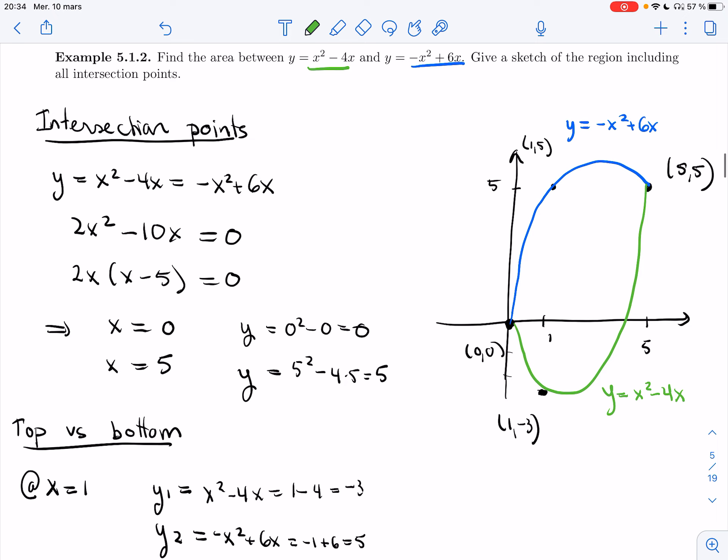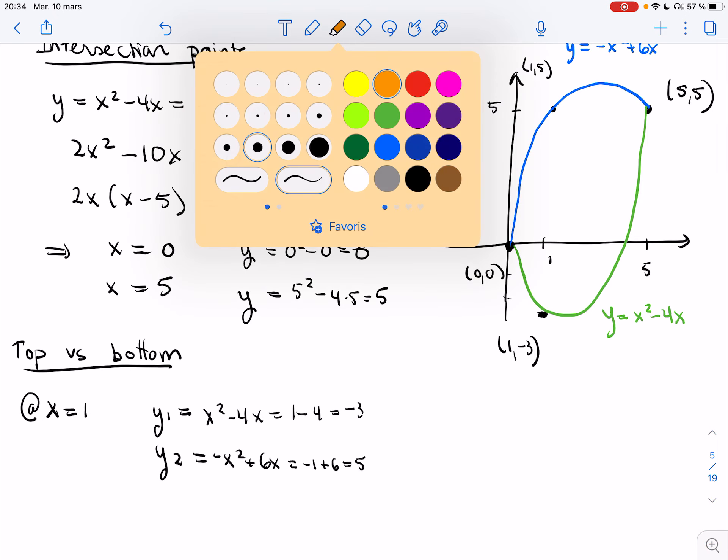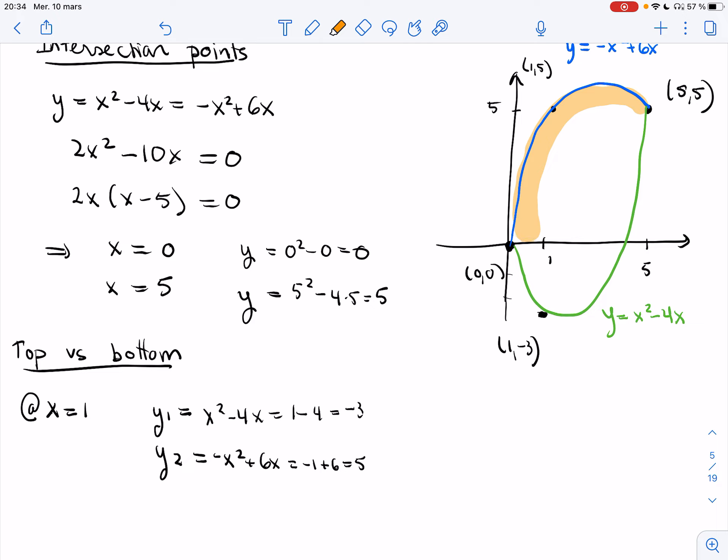Okay, so now that I have solved for these and tested everything, I know that the region looks something like that. I mean, it doesn't need to be very precise. I just need to make sure that I have the right intersection points and the right curve above and below.